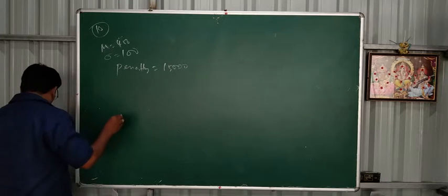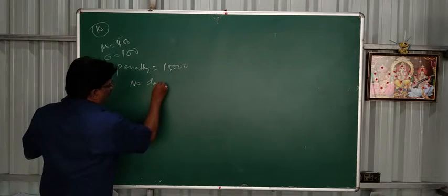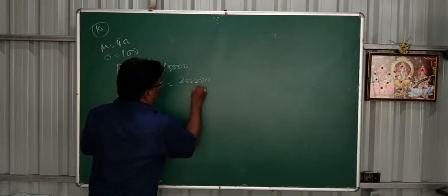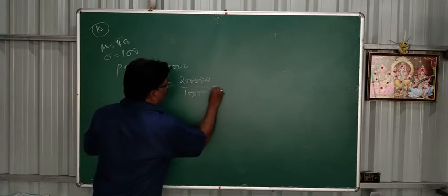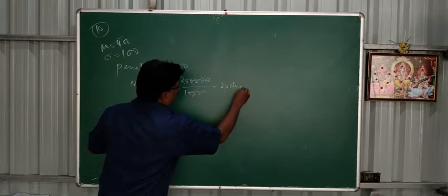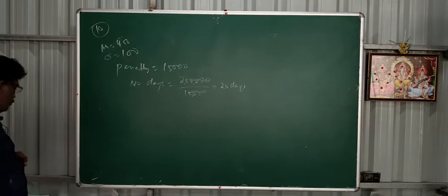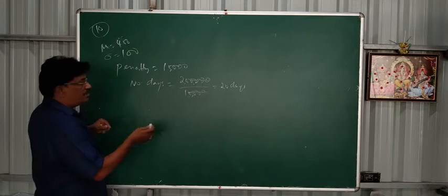You have to pay penalty 2 lakhs. Then number of days: 2 lakhs by 10,000 rupees equals 20 days. Then 20 days extra. Total days 450 plus 20 equals 470 days.